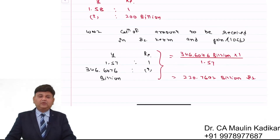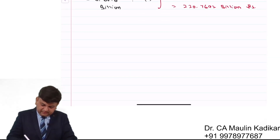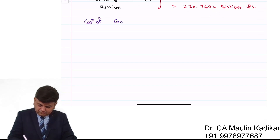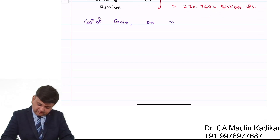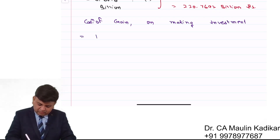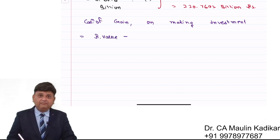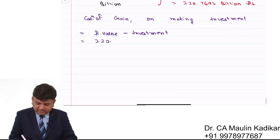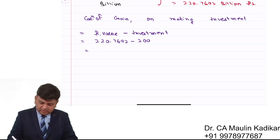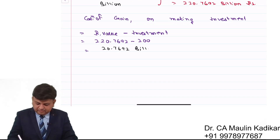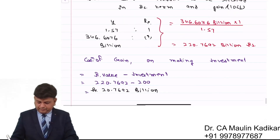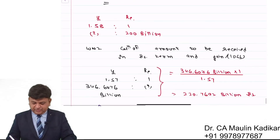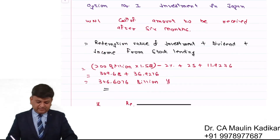Final answer — Calculation of Gain on making investment in Japan: Amount received in rupees = 220.7692 billion, minus initial investment of 200 billion. Gain = 20.7692 billion rupees. This concludes Option 1.